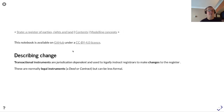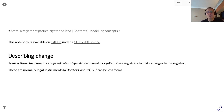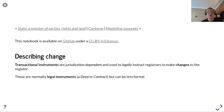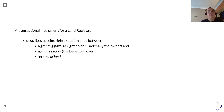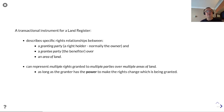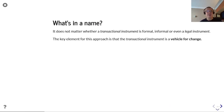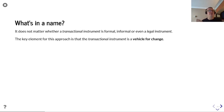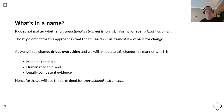Transactional instruments are jurisdictionally dependent and used to legally instruct registrars to make changes to the register. These are normally legal instruments - a deed or contract - but can be less formal. A transactional instrument for a land register describes specific rights relationships between a granting party, a right holder, and a grantee party over an area of land. It can represent multiple rights granted to multiple parties over multiple areas of land, as long as the grantor has the power to make the rights changes. The key element is that the transactional instrument is a vehicle for change - articulated in a manner that is machine-readable, human-readable, and legally competent.